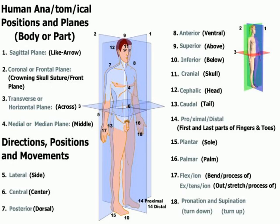These terms might be better understood in reference to an animal like a dog. Anterior would be the dog's head, posterior would be the tail, dorsal would be its upper back, and ventral — which means belly — is the belly of the dog.